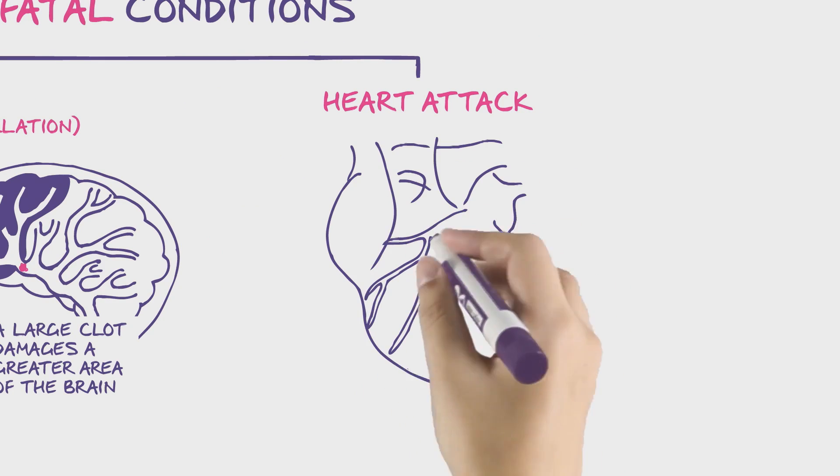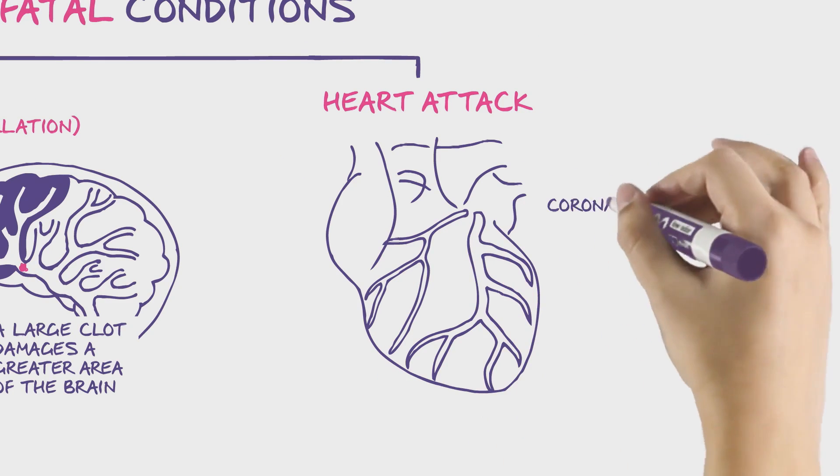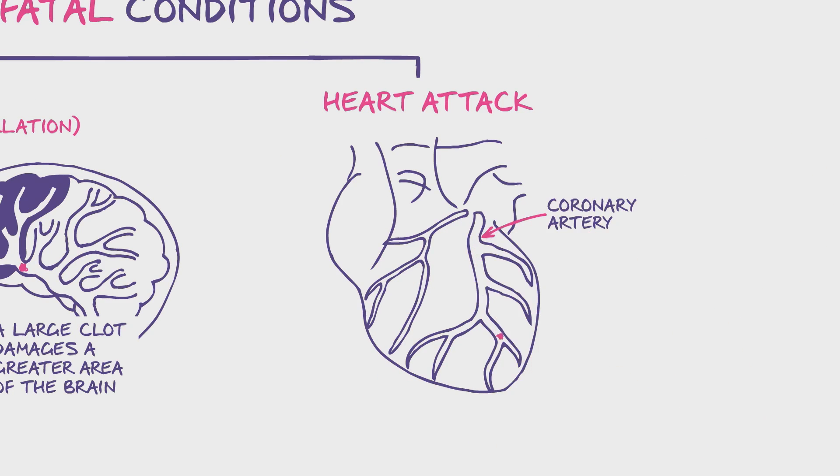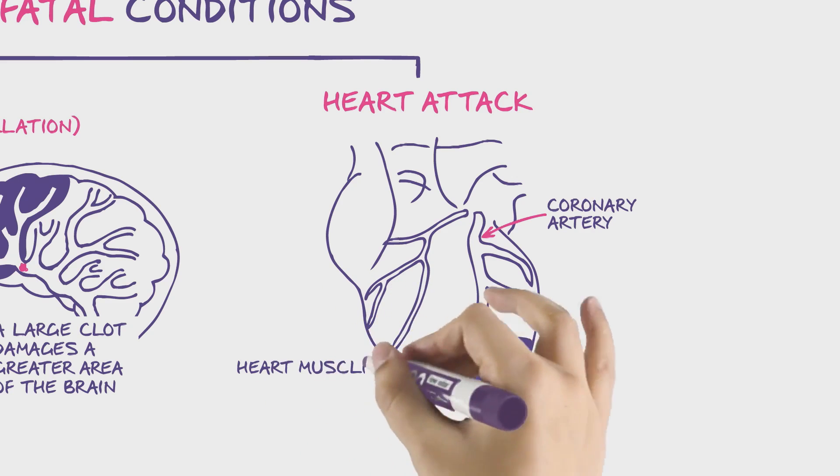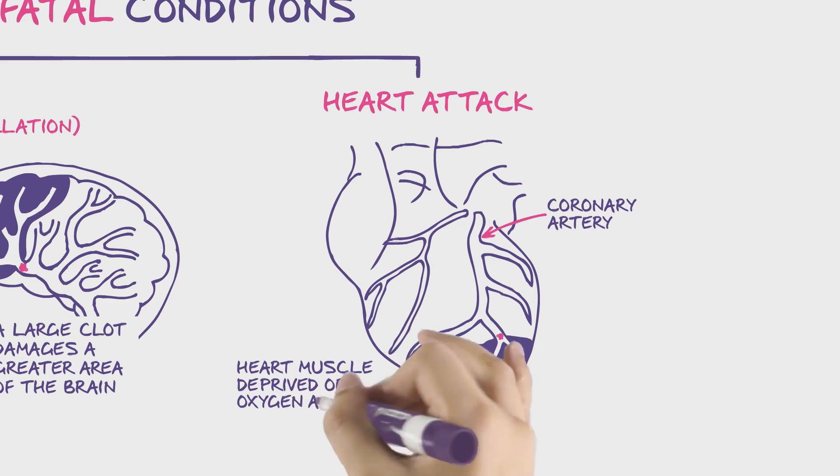In a heart attack, a clot in one of the coronary arteries blocks blood flow to the muscles of the heart, depriving them of oxygen and nutrients.